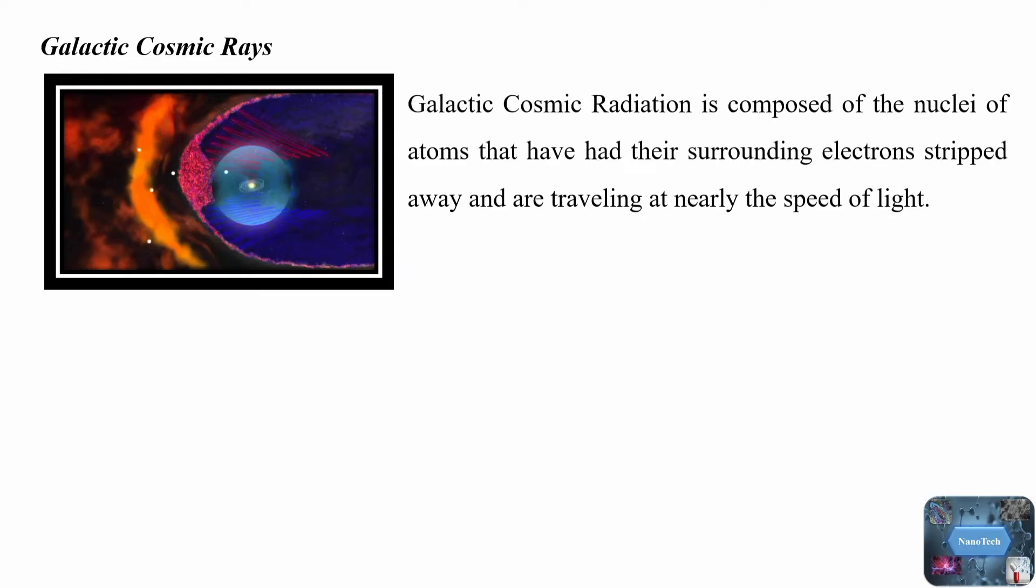Galactic cosmic radiation is composed of the nuclei of atoms that have had their surrounding electrons stripped away and are traveling at nearly the speed of light. Another way to think of galactic cosmic radiation would be to imagine the nucleus of any element in the periodic table from hydrogen to uranium. Now imagine that same nucleus moving at an incredibly high speed.